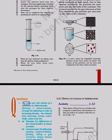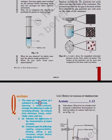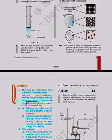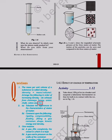Questions: The mass per unit volume of a substance is called density. Density equals mass over volume. Arrange the following in order of increasing density: air, exhaust from chimneys, honey, water, chalk, cotton and iron.